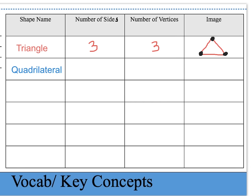The next shape is a quadrilateral, which is any shape that has four sides — because the word quad means four. A quadrilateral has four sides and four vertices. Here's an image of a quadrilateral with the first vertex, the second, third, and fourth vertex labeled.